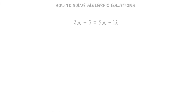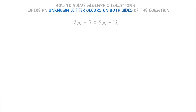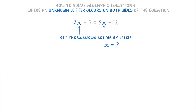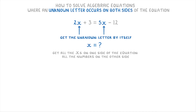In today's video we're going to cover how to solve algebraic equations like this one here, where the unknown letter occurs on both sides of the equation. For example, in this question the unknown letter is x, so we're trying to find the value of x. Importantly, we have two x terms — a 2x term on the left and a 5x term on the right. To solve equations like this, we need to get the unknown letter all by itself, ending with just x equals some number. To do this, we first need to get all the x's on one side and all the numbers on the other side.